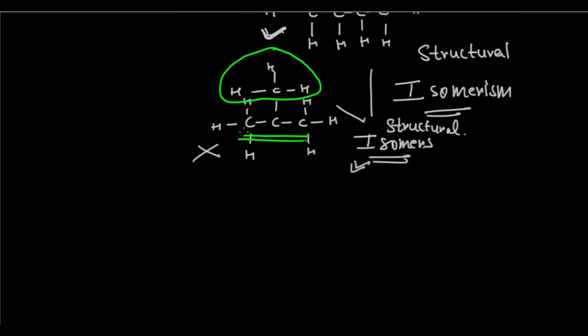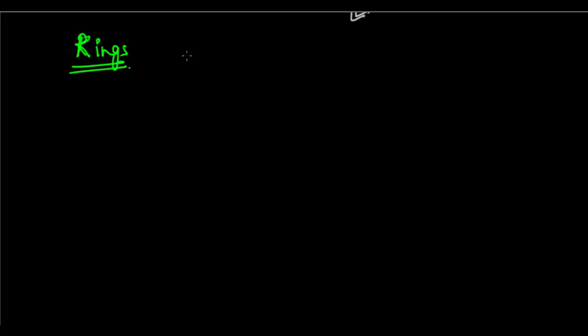We've looked at chains, isomerism, and branches — because that second C4H10 structure is an example of a branched chain hydrocarbon. Now let's have a look at rings. If you look at the compound C6H12, you can arrange it in a straight chain, but there is another way — in the form of a ring.